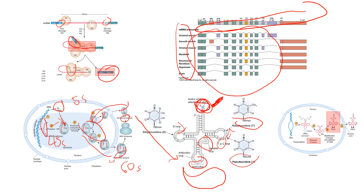With tRNA, the five prime end is cleaved by RNase P to shape its structure. A more important enzyme — nucleotidyl transferase — adds a segment that allows amino acids to eventually bind, which is the whole point of tRNA: to transport amino acids. tRNA synthesis takes place in the nucleus, but since protein assembly takes place in the cytoplasm, it's used in the cytoplasm. And with that, good luck on your exam or quiz.